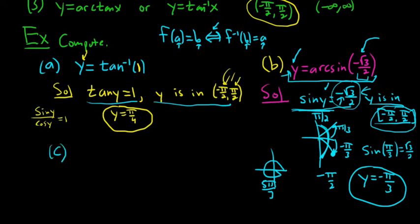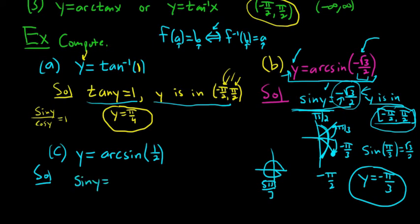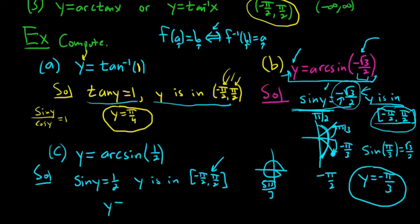Example c: y equals arcsine of 1 half. If arcsine takes 1 half and sends it to y, the sine function takes y and sends it back to 1 half, and y is in negative pi over 2 to pi over 2. The sine of pi over 6 is equal to 1 half, and pi over 6 is between those numbers, so the answer is pi over 6.